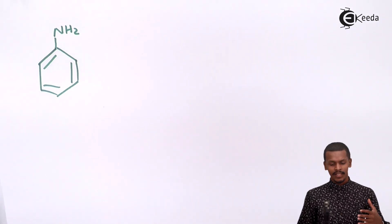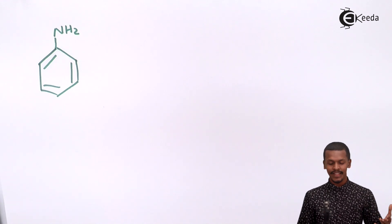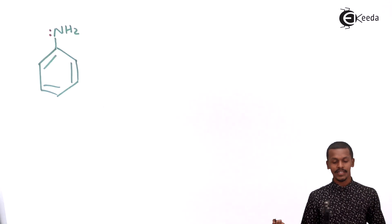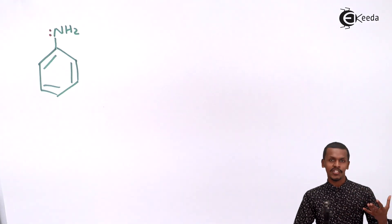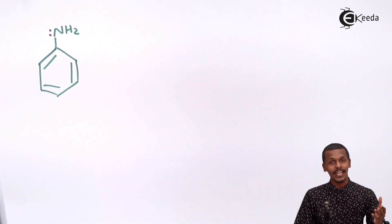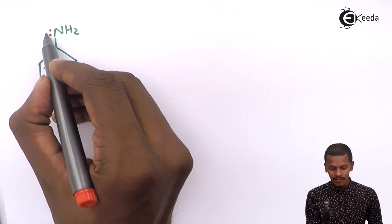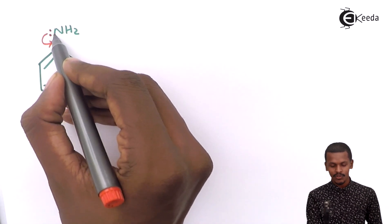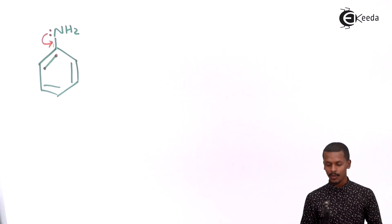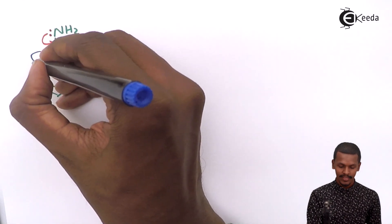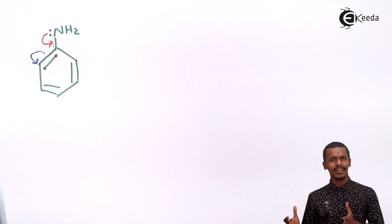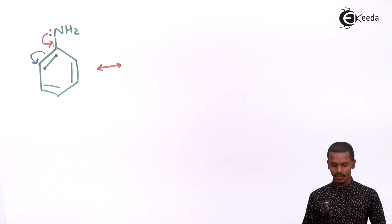The electron transfer will be away from the substituent. The reason is that nitrogen consists of a lone pair of electrons — these two electrons. The delocalization will take place such that these two electrons will form a bond between the nitrogen and the adjacent carbon. Meanwhile, the two electrons of two different carbon atoms will jump onto the next carbon atom.